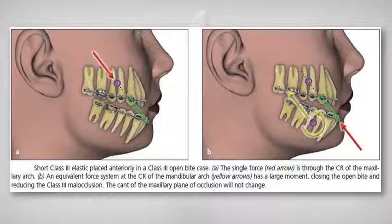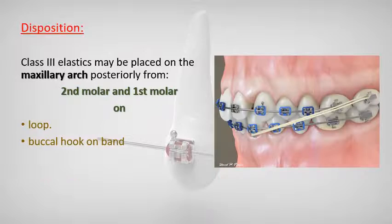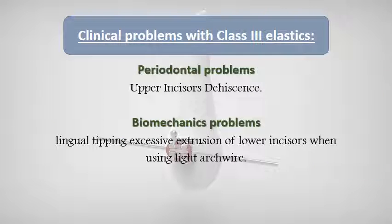Class 3 elastics may be placed on the mandibular arch anteriorly on sectional arch wire, continuous arch wire with anterior loops, sliding hook, Kobayashi ligature tie, and bracket hook. Class 3 elastics may be placed on the maxillary arch posteriorly extending to the second molar or first molar on loops or buccal hook of bands. Clinical problems with Class 3 elastics include periodontal problems such as upper incisor dehiscence, biomechanical problems, lingual tipping, and excessive extrusion of the lower incisors when using light arch wires.